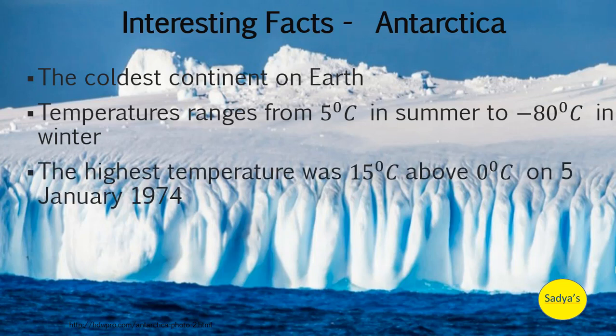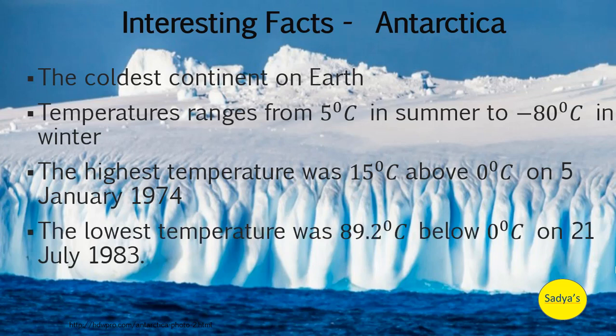Here the temperature ranges from 5 degrees Celsius in summer to minus 80 degrees Celsius in winter. The highest temperature ever recorded in Antarctica was 15 degrees Celsius above zero degrees Celsius on 5th January 1974. And the lowest temperature ever recorded in Antarctica was 89.2 degrees Celsius below zero degrees Celsius on 21st July 1983.